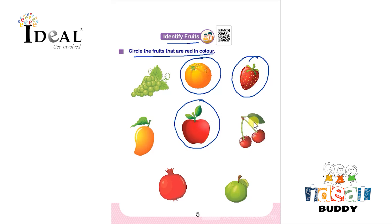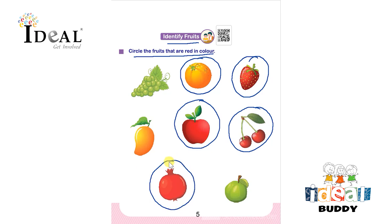Next is cherries — cherries are also red, so the child has to encircle them. Next is a pomegranate — pomegranate is also red. The child has to identify and encircle all red-colored fruits to complete the worksheet, and while circling they should say the name of each fruit.